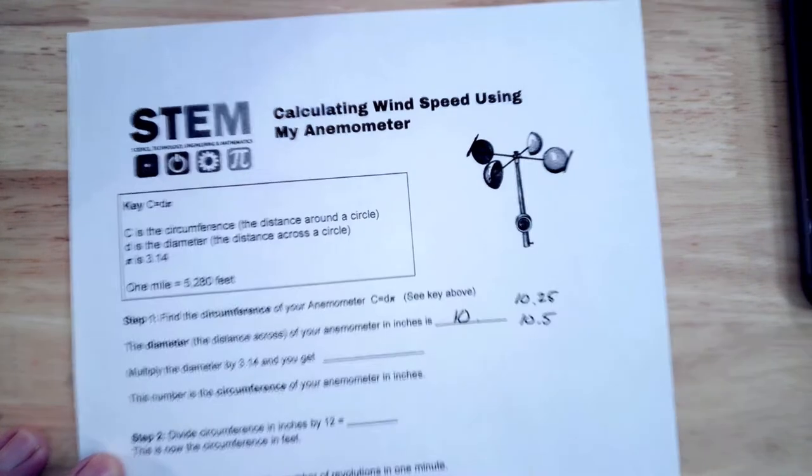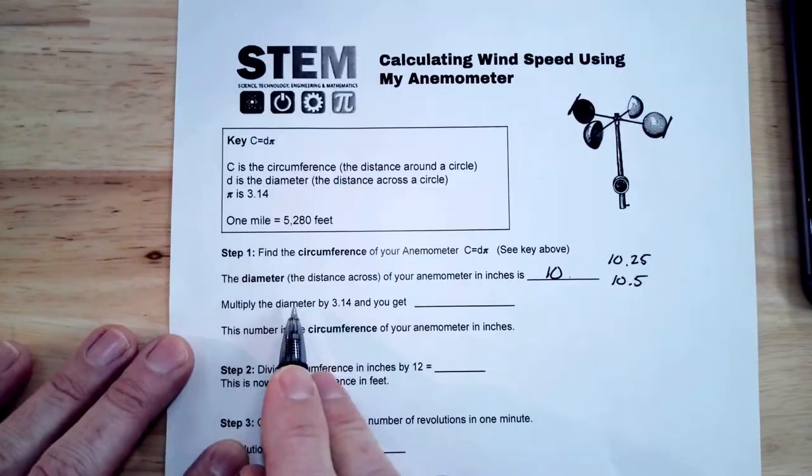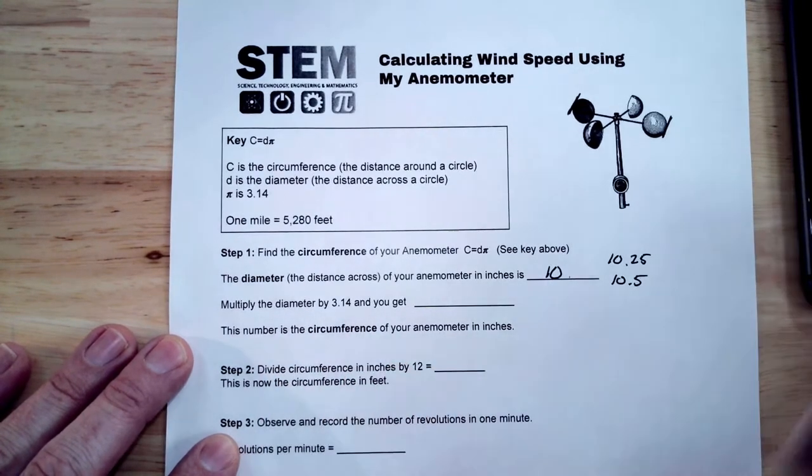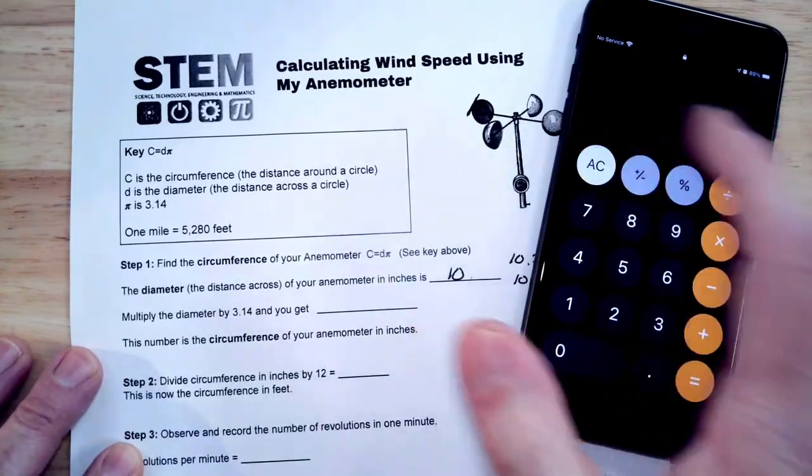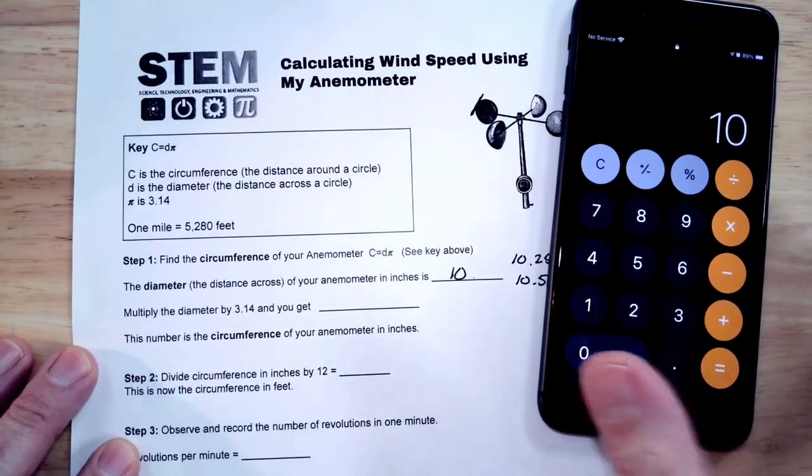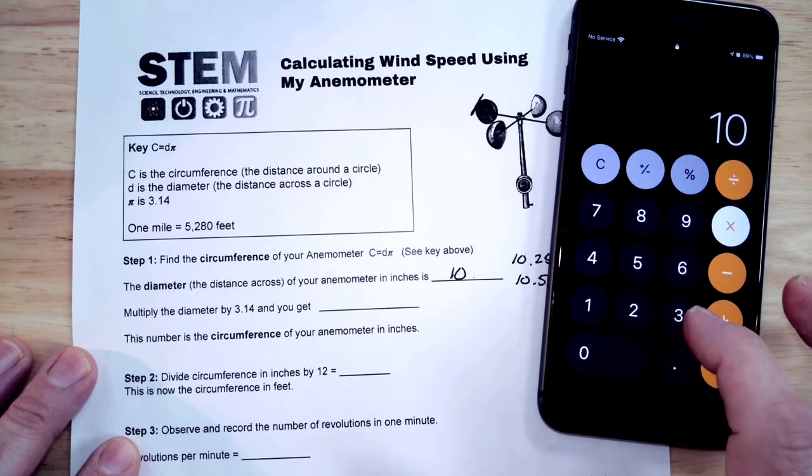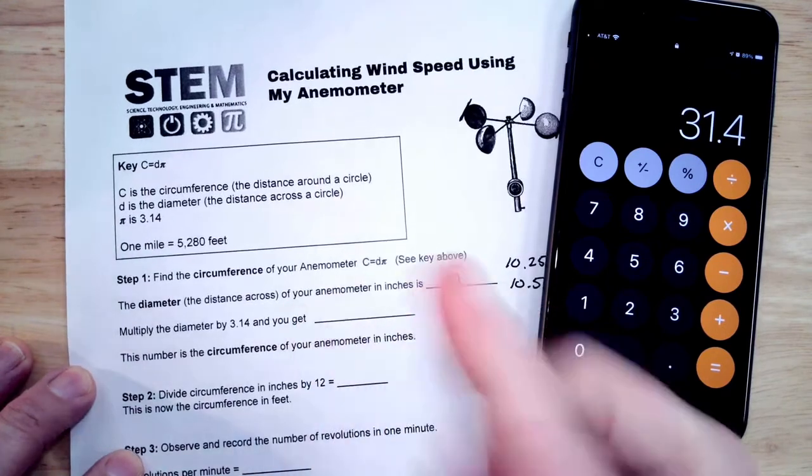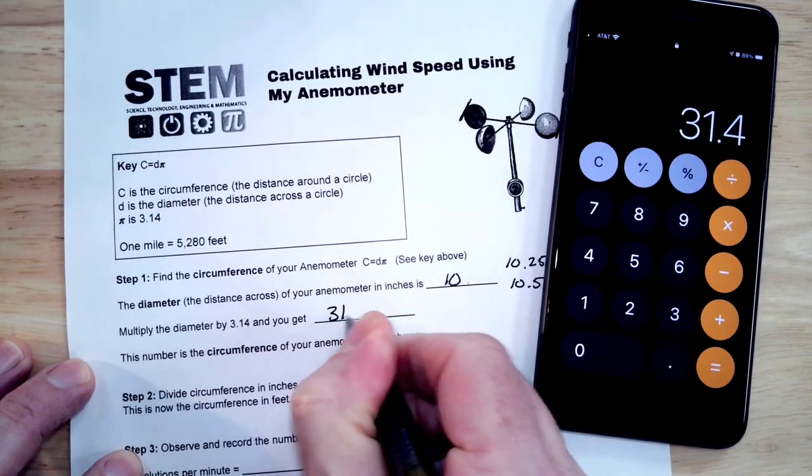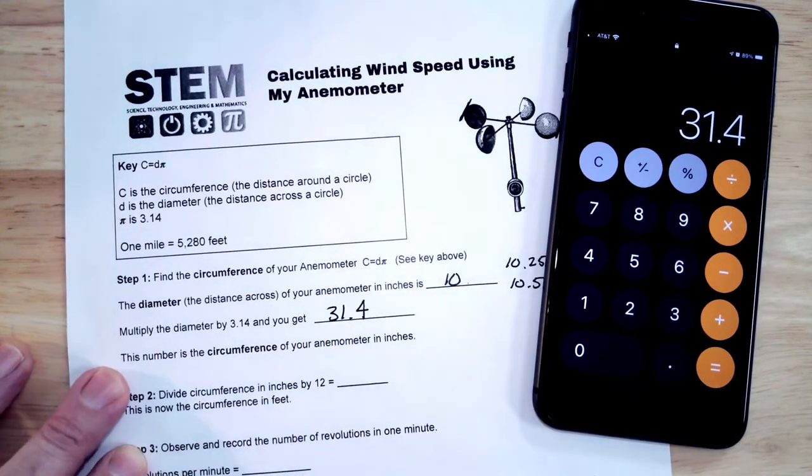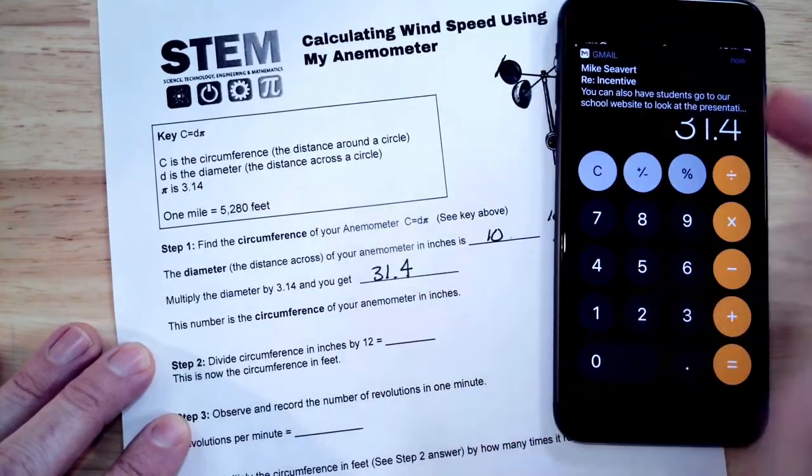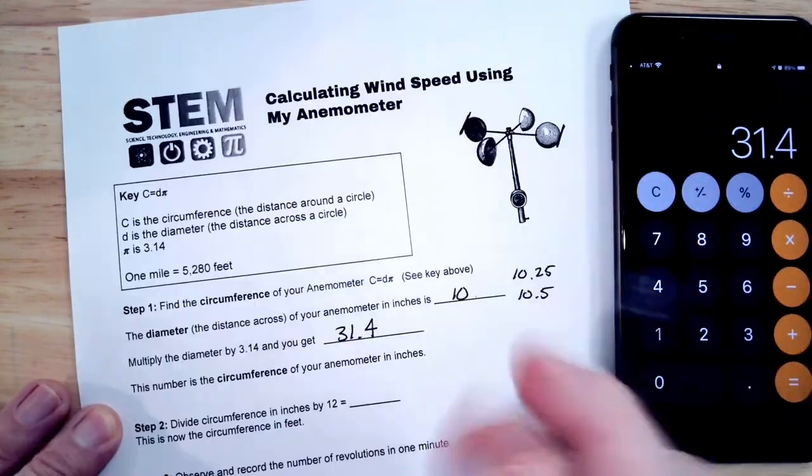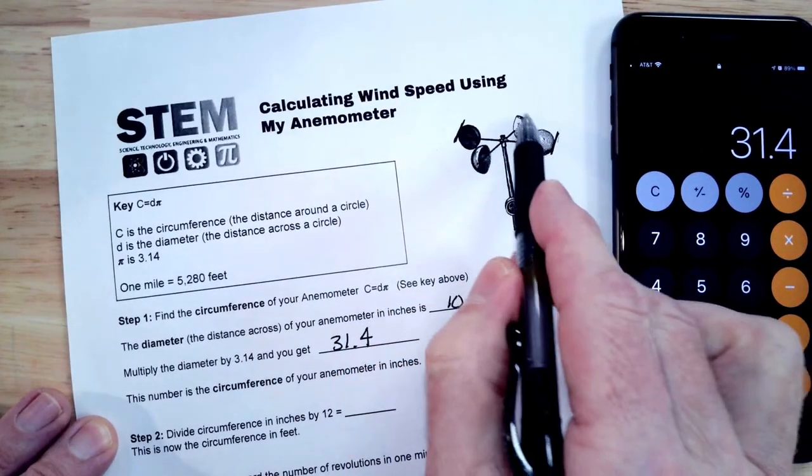Now we're going to multiply the diameter, which was 10, by 3.14. So we'll just check that out here. So 10, this is obviously easy mental math here, so 10 times 3.14 is going to give us 31.4, we're just moving the decimal over one spot. So that's 31.4. And this number is the circumference of your anemometer now in inches, so that's the total circumference, so it's 31.4 inches all the way around.